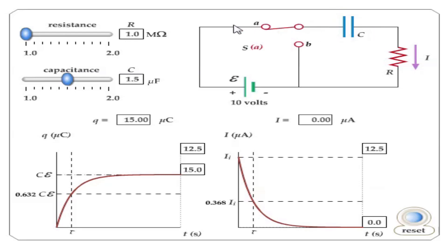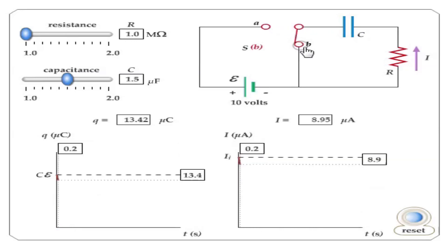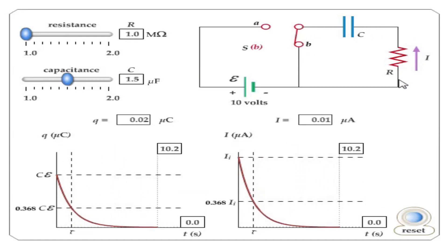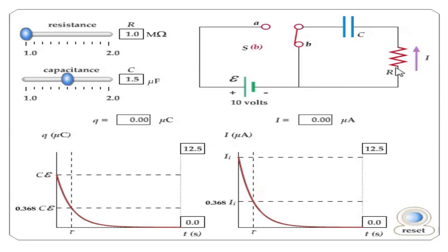If I trace the circuit, the presence of the battery tells us that this circuit is the circuit for the charging process. However, if I flick the switch to junction B, my circuit is going to be composed of the capacitor, the resistor, and the switch.